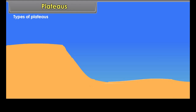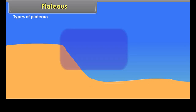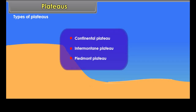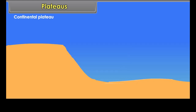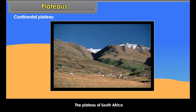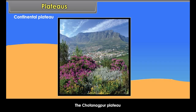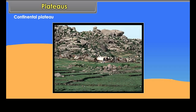On the basis of their geographical location and structure, plateaus are of different types: continental plateau, intermontane plateau, and piedmont plateau. Continental plateaus rise abruptly from the adjoining sea or lowlands. The plateau of South Africa, the plateau of West Australia, the Chotanagpur Plateau, and the Deccan Plateau are examples of this type.